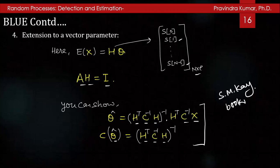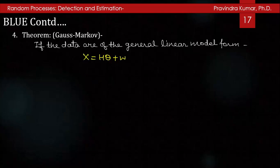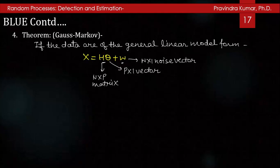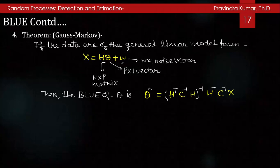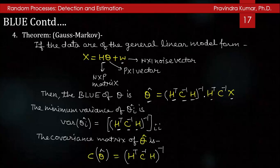Now the Gauss-Markov theorem: If the data follow the general linear model x = Hθ + ω, where H is N×p, θ is the p×1 parameter vector, and ω is N×1 noise with mean zero and covariance C, then the BLUE of θ is θ̂ = (H^T C⁻¹ H)⁻¹ H^T C⁻¹ x, and the minimum variance of θ̂_i and the covariance matrix of θ̂ are both given by (H^T C⁻¹ H)⁻¹.